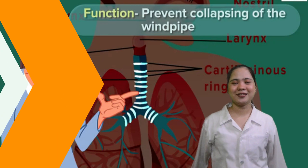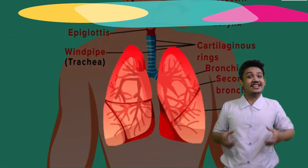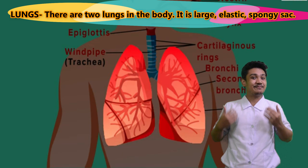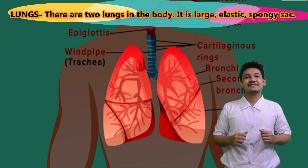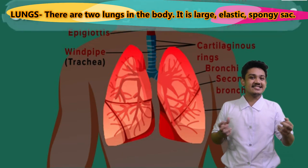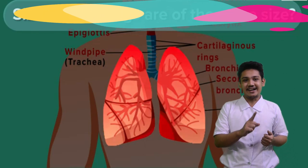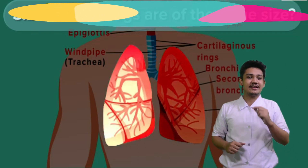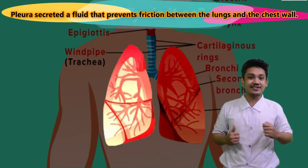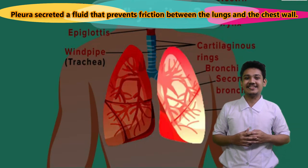Next, we have the lungs. There are two lungs in the body. They are large, elastic, spongy sacs. The pleura secretes a fluid that prevents friction between the lungs and the chest wall.